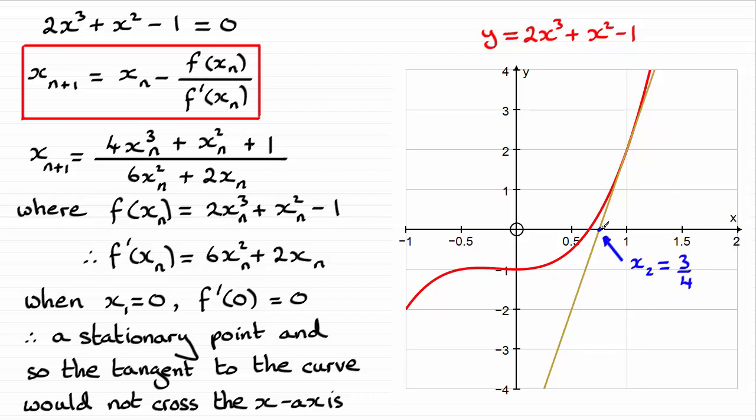And what we do next is we take our value of 3 quarters, and we're looking at this point on the curve, just above it. And we're looking to draw the tangent at that point on the curve.